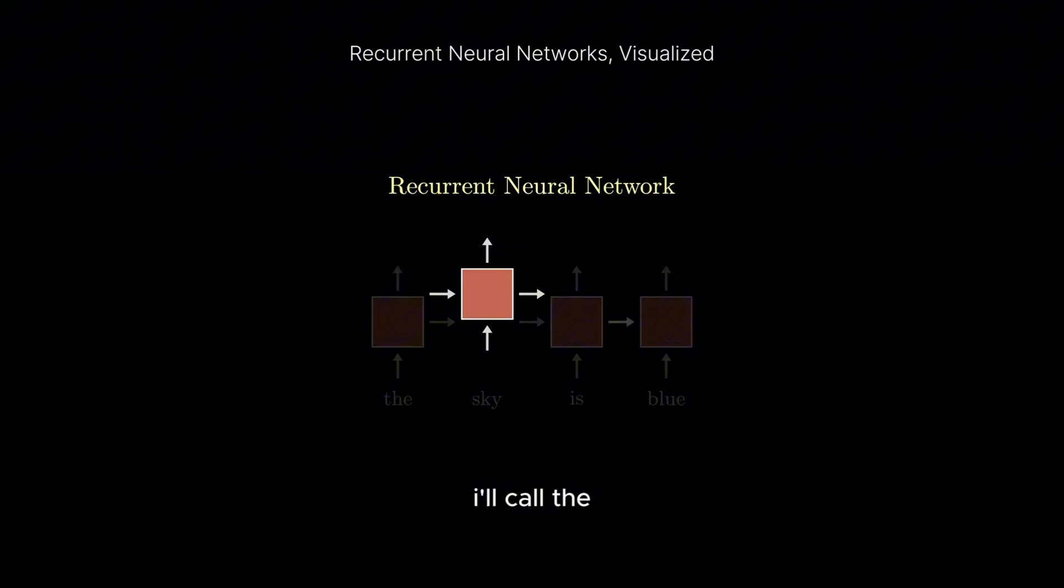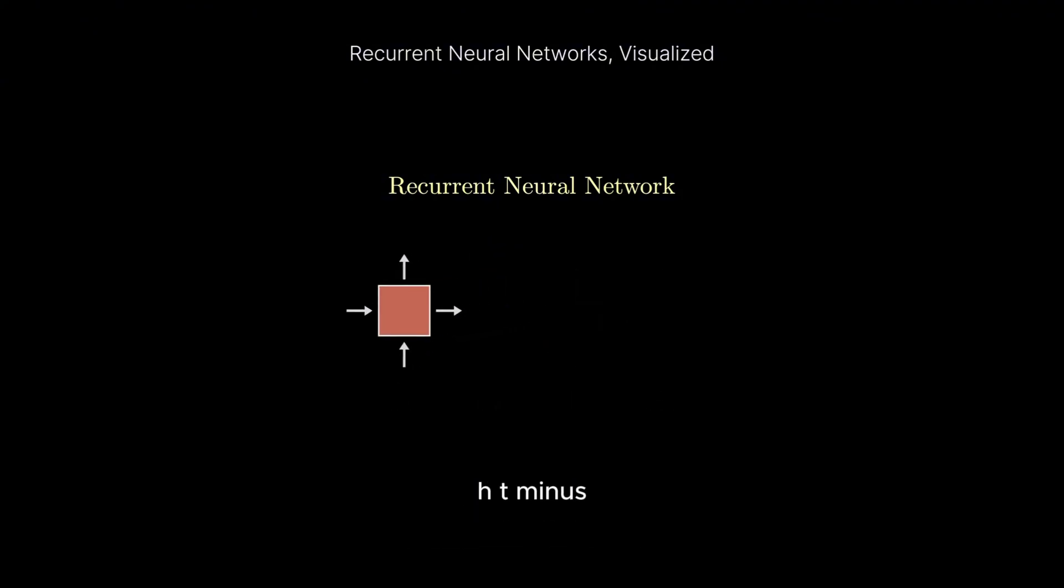Let's look at one cell. I'll call the previous hidden state h, the input x, and the output y.